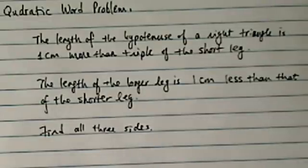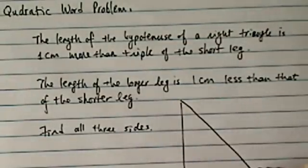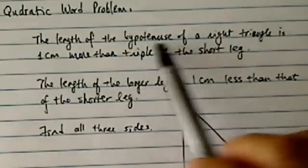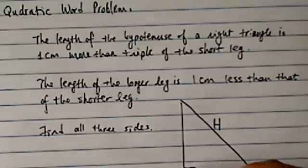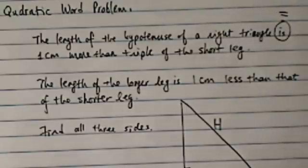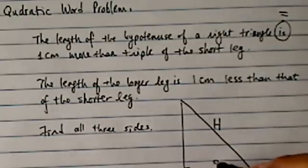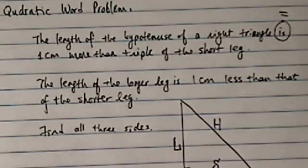This is a really interesting problem. So basically we're given a right triangle, there's a lot of verbiage here. It says the length of the hypotenuse, let's put a little hypotenuse here, the red triangle. Length of hypotenuse is, which means equals, one centimeter more than the short leg. Let's call this one short leg, then obviously this becomes a long leg.